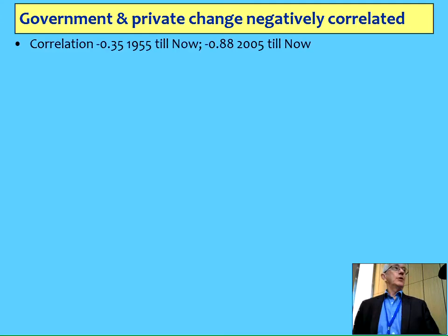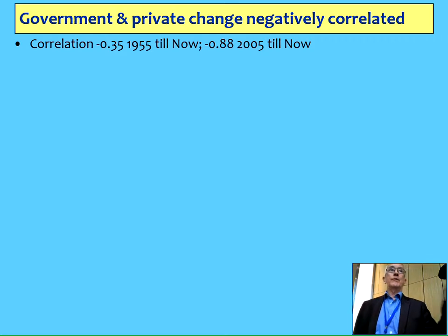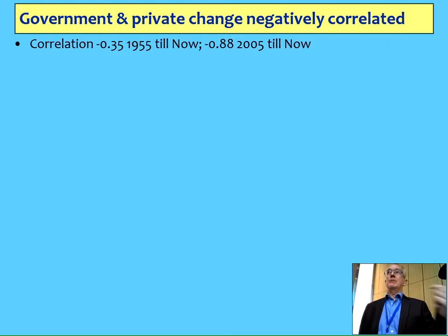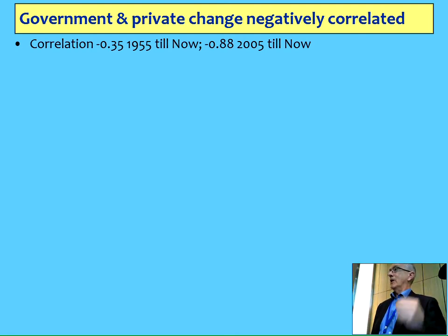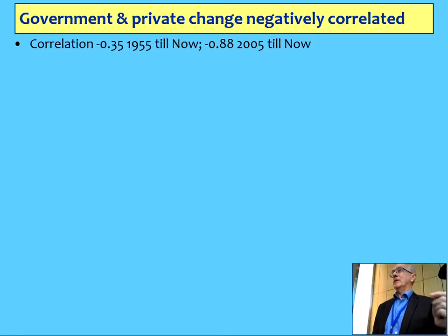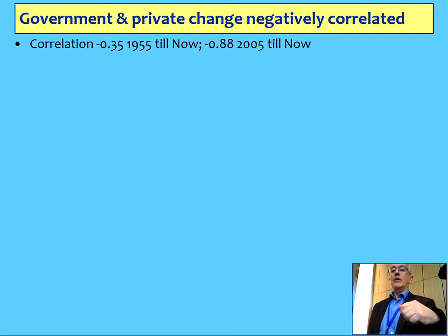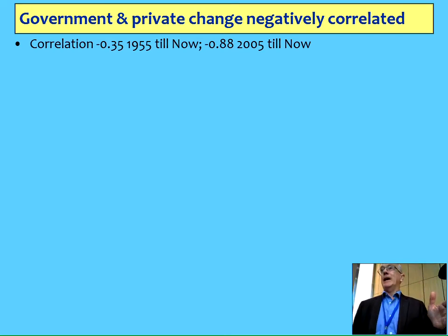When you take a look at that, you find in fact there's a negative correlation between the two. Rising public debt normally goes with falling private and vice versa. Because private debt's been rising, we've normally seen falling public debt over the post-war period. And that correlation's been getting stronger — it was a fairly unimportant minus 0.35 from 1955 right to now, but from 2005, now it's pretty significant, minus 0.88.